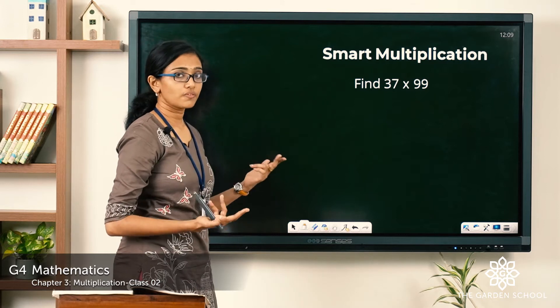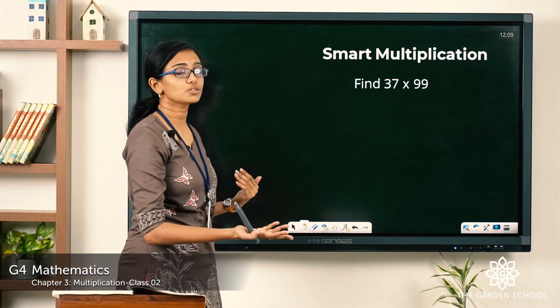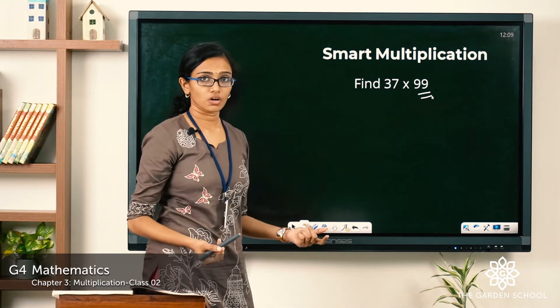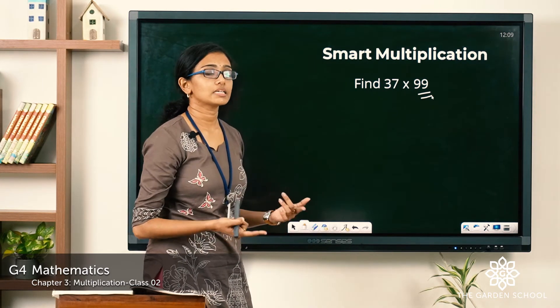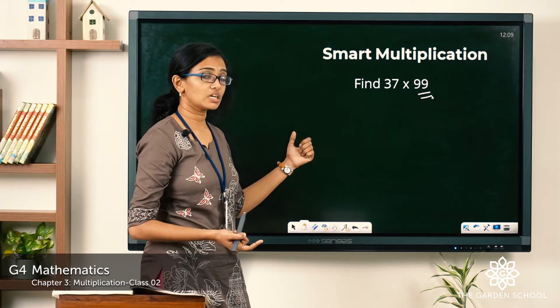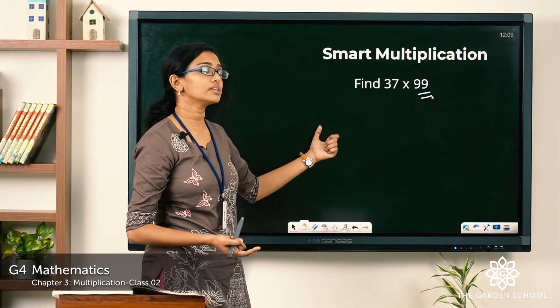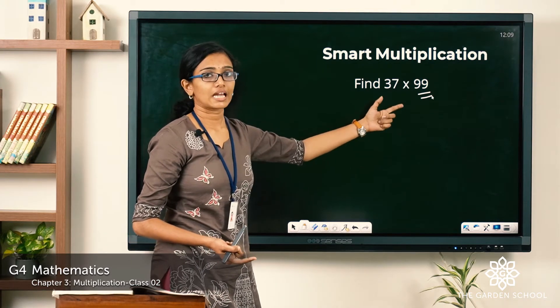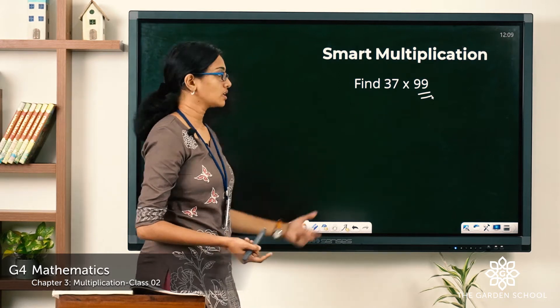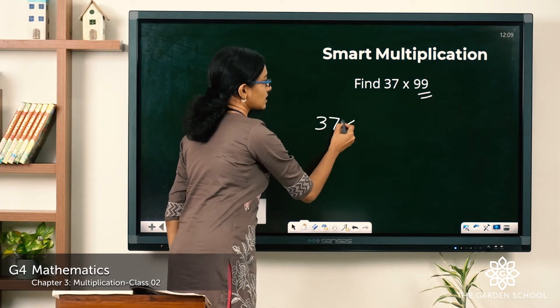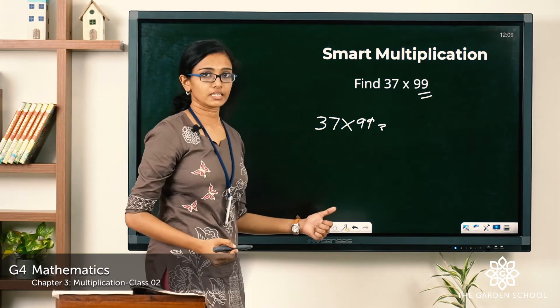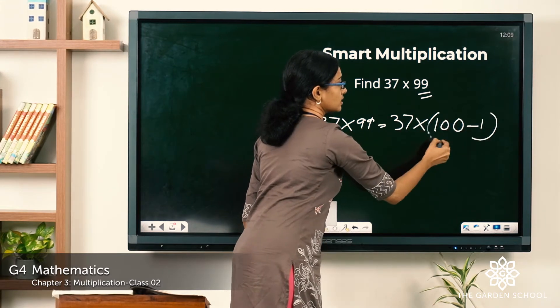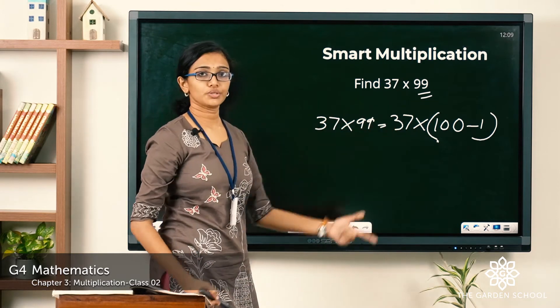See, it is 37 into 99. We know it is very easy to find 37 into 100. You just insert two zeros to the right of 37. But here instead of 100 we have 99, and we know 99 is actually 100 minus 1. So if we know the answer to 37 into 100, it would be easy to find out what is 37 into 99. So I am rethinking this 99 as 100 minus 1.